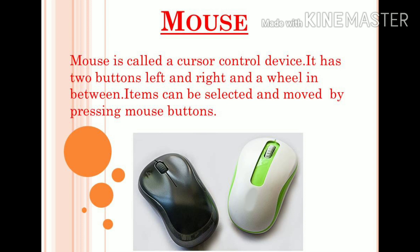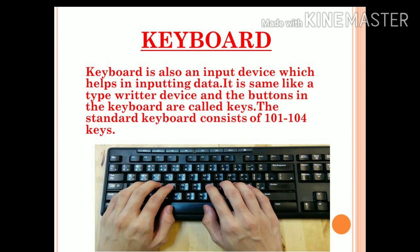The first input device we will study is the mouse. Mouse is also called a cursor control device. It has two buttons — one is the left button and the other is the right button — and a wheel is present between the buttons. We can select an item or move an item with the help of the mouse button.